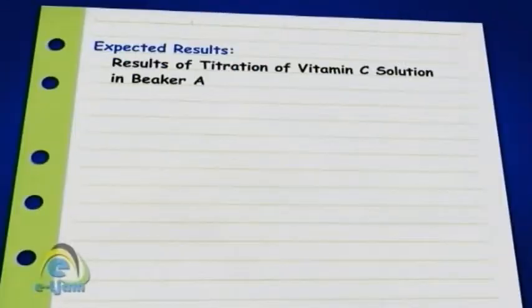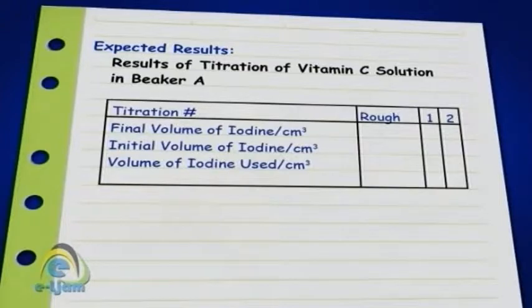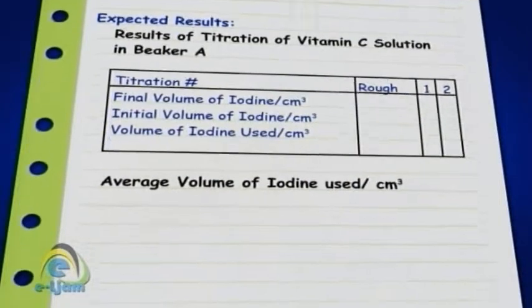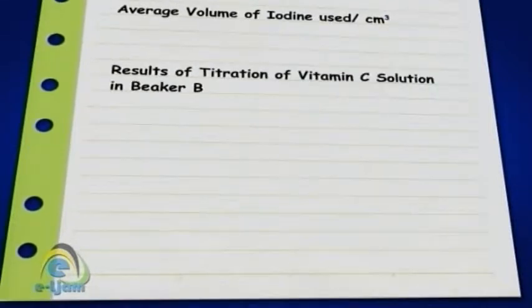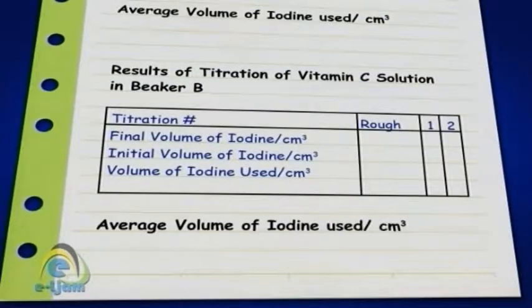The next step is to write out your expected results. The word 'expected' is used because, remember, you have not carried out your investigation. It is very important that your expected results agree with your hypothesis, that no values are given since you have not carried out the investigation, and also that you clearly state how the results will be treated.